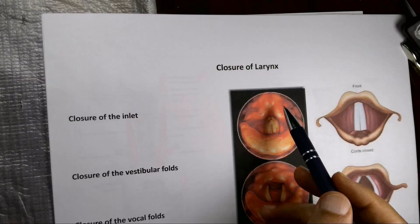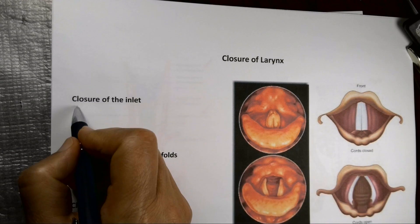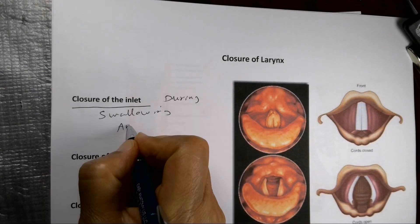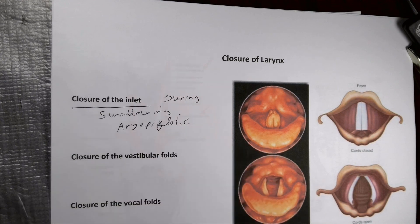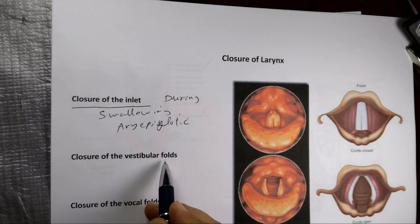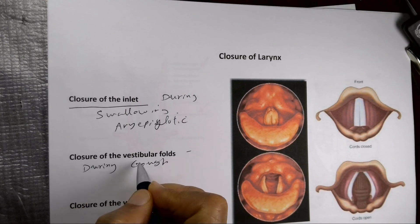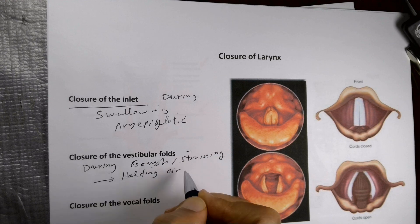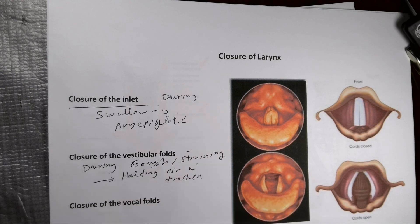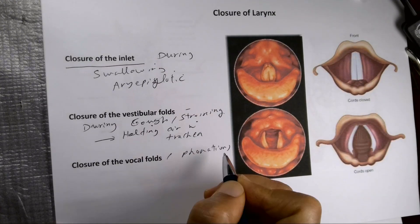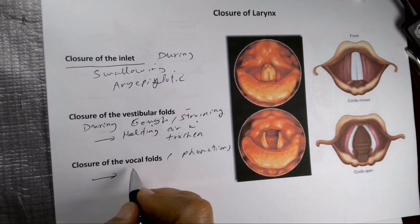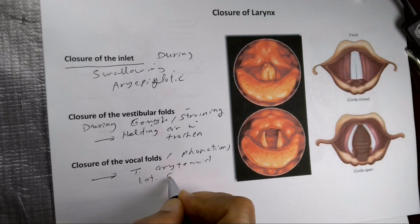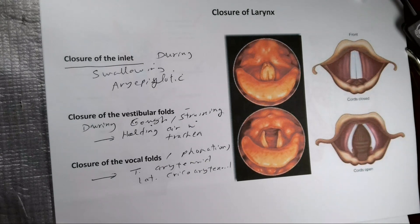To summarize closure of the larynx: closure of the inlet occurs during swallowing, and the important muscle is the aryepiglottic muscle. Closure of the vestibular fold occurs during coughing or straining — to increase intrathoracic pressure and hold air in the trachea. For closure of the vocal cord during phonation, the important muscles are the transverse arytenoid and the lateral cricoarytenoid.